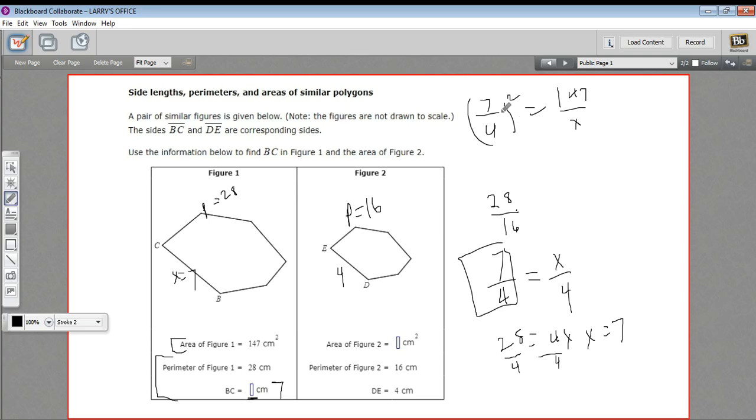Let's do some simplification here. If I square 7 fourths, I get 49 over 16. And here I've got 147 over x. I can cross multiply. So 49 times x equals 16 times 147. I'm going to need to pull up my calculator for that. Times 147.